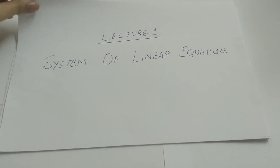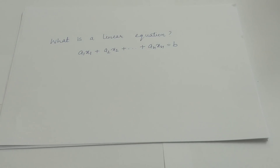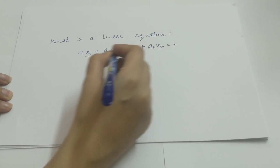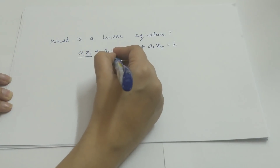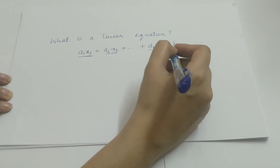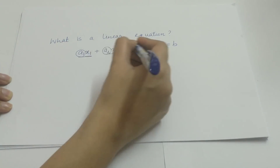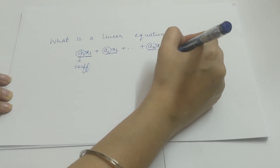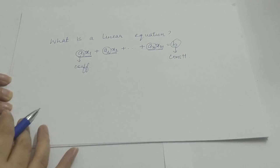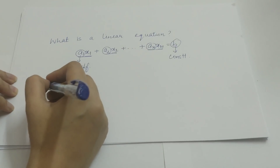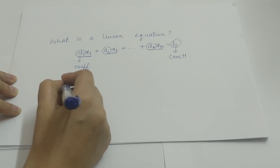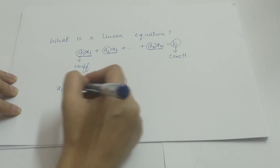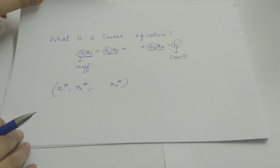Before that we need to know what a linear equation is. A linear equation in n variables x1, x2, ..., xn is of the form a1x1 + a2x2 + ... + anxn = b, where a1, a2, ..., an are coefficients and b is the constant term of this linear equation. A solution to this linear equation is an n-tuple (x1*, x2*, ..., xn*) that satisfies this linear equation.